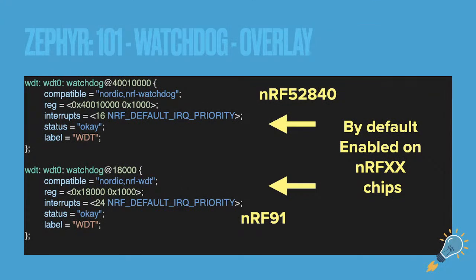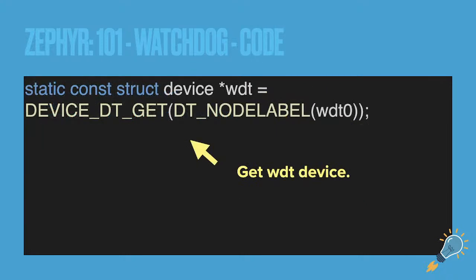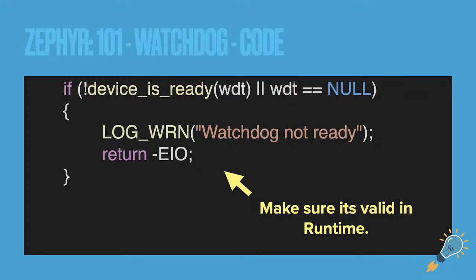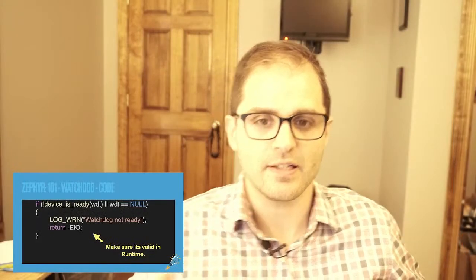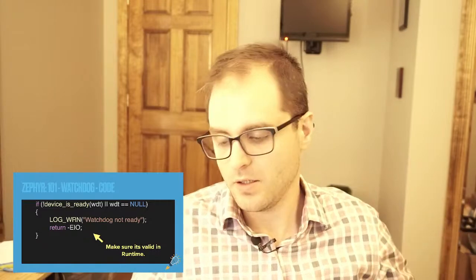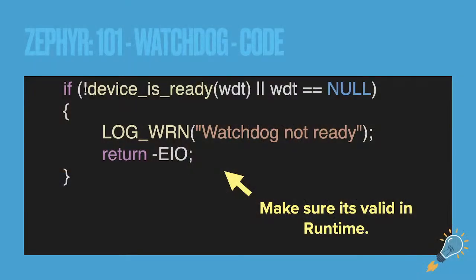So both the nRF52 and nRF91 have the watchdog enabled by default — you don't need to do anything in your overlays. To grab the watchdog device, use `device_dt_get`, which gets it at compile time rather than runtime. If your watchdog timer is labeled `wdt` or `wdt0` and it's not found, you'll get compilation errors. It's always good to check that the device is ready — this is especially useful for bus-connected devices that may not be present or powered.